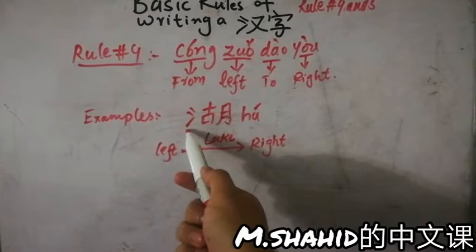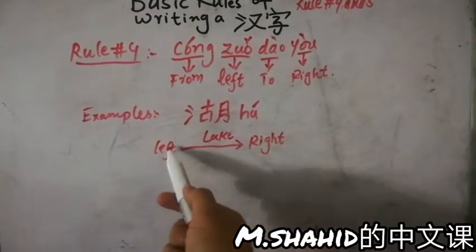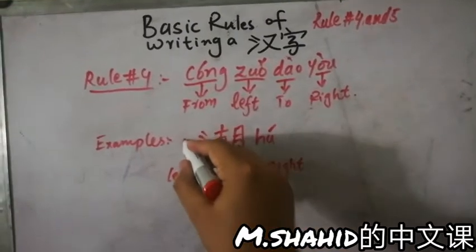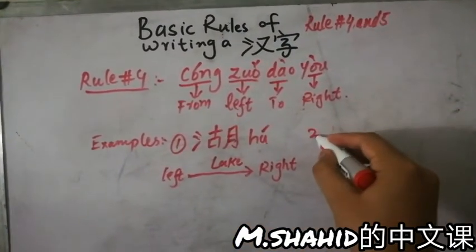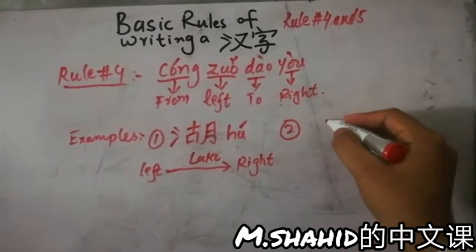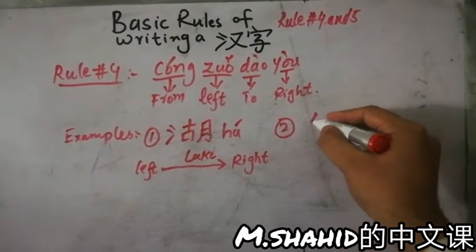You cannot write this character by starting this first and this second and this third, no. You will start to write the Chinese character in this direction, from left to right. Okay, let's just discuss another example.